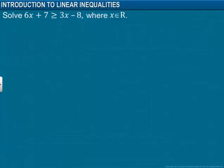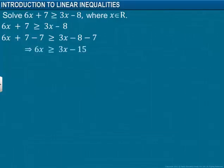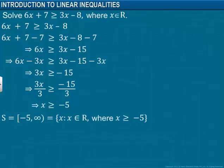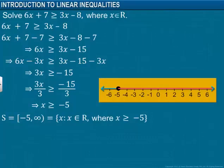Next, we solve an inequality having two algebraic expressions. As discussed earlier, the technique is to make the coefficient of x equal to 1. We subtract 7 from both sides to bring the constant to the right-hand side. Next, we subtract 3x from both sides to combine the variables on the left-hand side. We get 3x greater than or equal to minus 15. Then, to make the x coefficient 1, we divide both sides by 3. We get the solution x greater than or equal to minus 5. The solution set and its graphical representation are as shown.